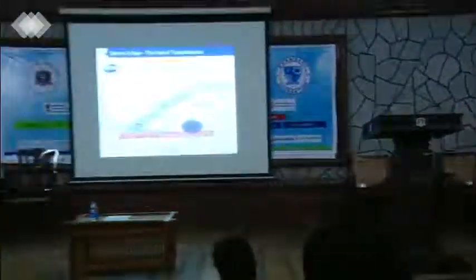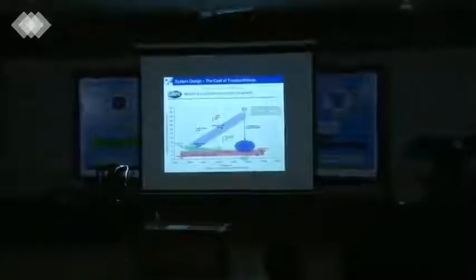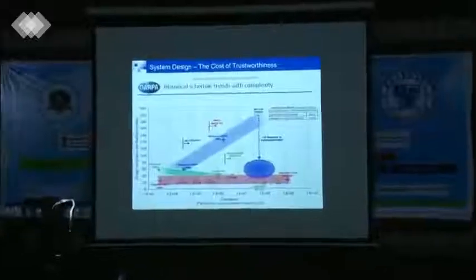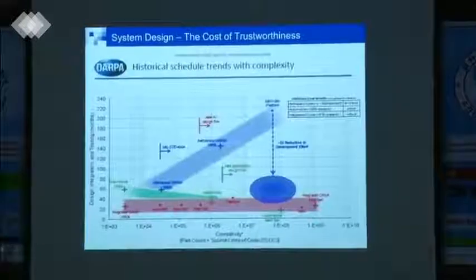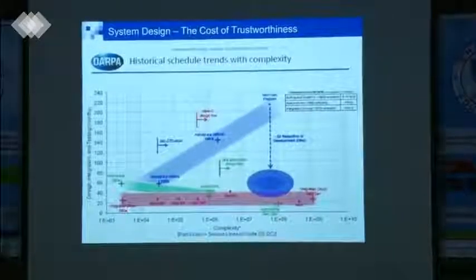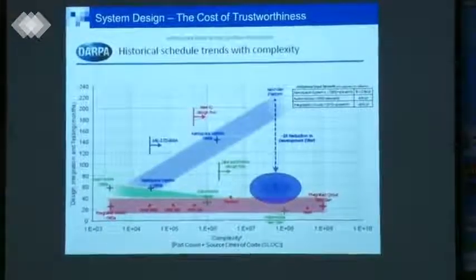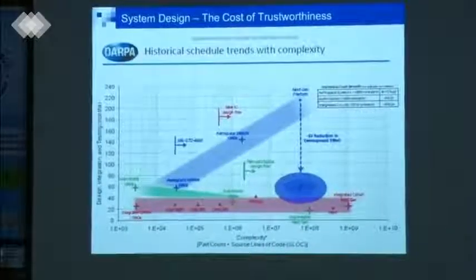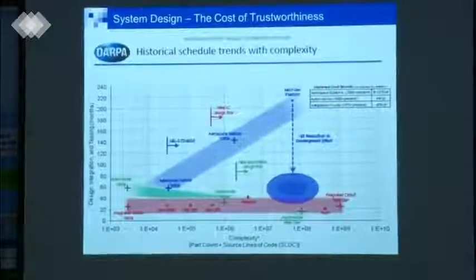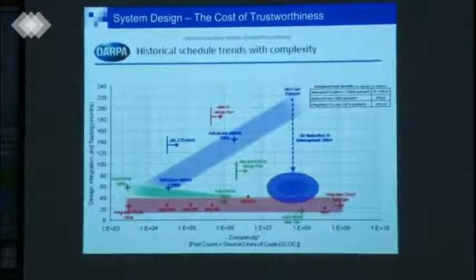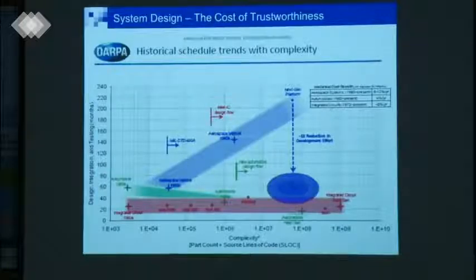This is a slide by DARPA — an agency that funds most military research in the United States. This slide shows a very important trend. The scale here is logarithmic. You have the complexity of the system measured in lines of code on one axis, and development costs on the other. What it shows is that for hardware, the development costs have remained constant despite the exponential increase of complexity over the years — you can see the different Intel processors plotted here.